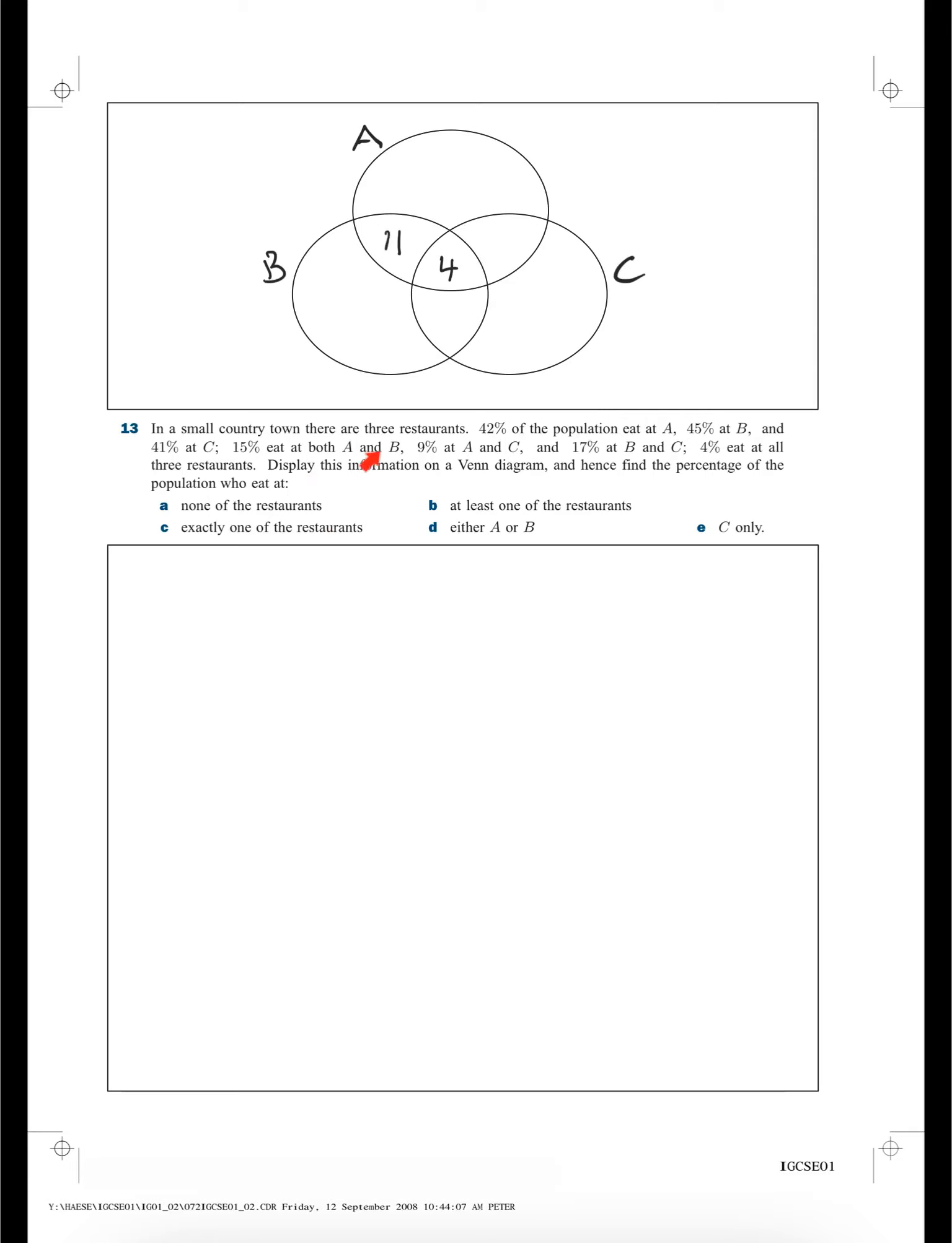They told us that 9% eat at A and C. So if 9% eat at A and C, the intersection here must be 9. If we've already got 4, we'll put a 5 here. And what about B and C? 17% at B and C. So if we've already got 4 in this area, the intersection of B and C, then we need to put a 13 here.